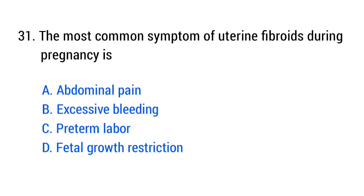Question number 31. The most common symptom of uterine fibroids during pregnancy is? The right answer is option A, abdominal pain.